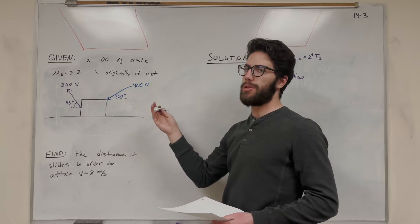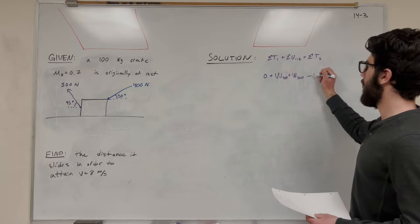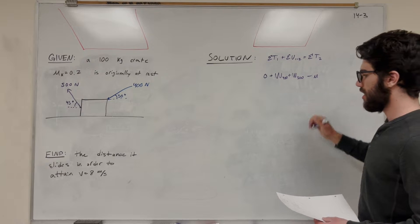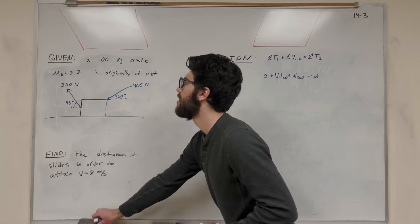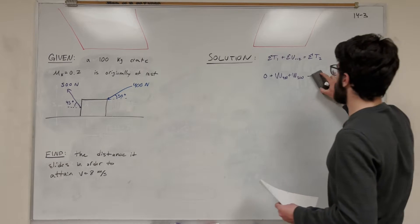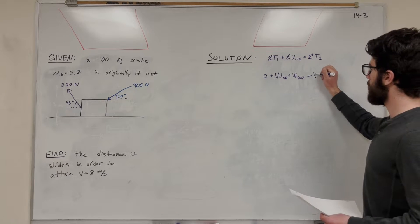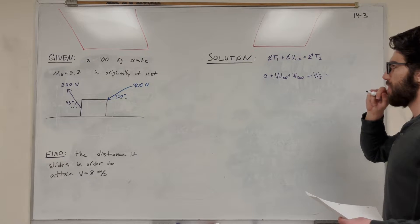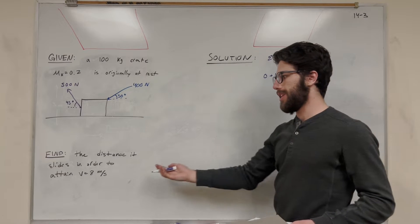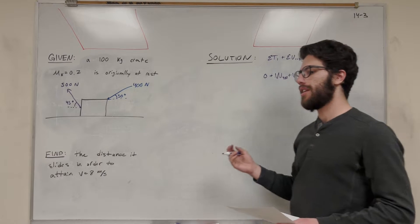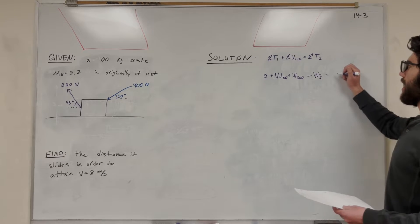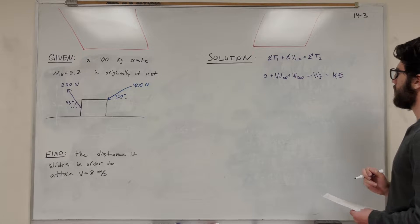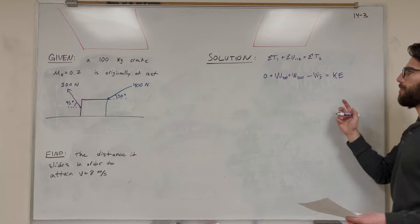Friction is going to be opposing that motion, so that's going to be taking away energy. We'll subtract the work due to friction. And then what's that equal to? That's our final energy. We're picking up speed — we know we're going to have a final velocity — so our final energy is going to be that kinetic energy.